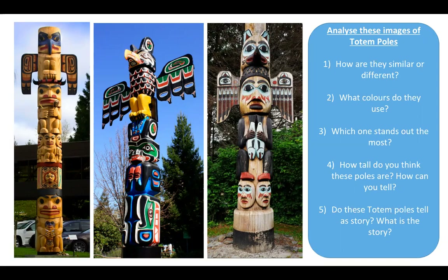Number two: what colours do they use? Well, there are lots of vibrant primary colours — there's a red, a yellow and a green. Number three: which one stands out the most? I rather like the one in the middle. I think the black enhances the red primary colours, so that one stands out for me the most. Number four: how tall do you think these poles are? I can see that these totem poles are as big as trees. In the middle picture there are trees that look very tall indeed, and in the picture on the left I can see cars. So these totem poles are much bigger than a car and almost as tall as trees — maybe up to seven or eight metres off the ground.